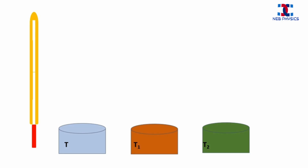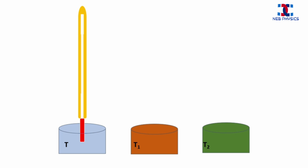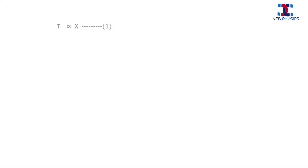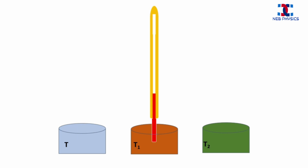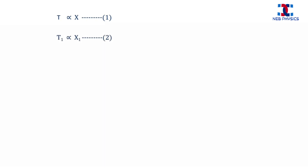Now let's see the process. First, we dip the thermometer in the first beaker and wait for the thermometric liquid to come in thermal equilibrium. Let the expansion of the thermometric liquid be x, so T is proportional to x — let this be equation 1. Now we dip the thermometer in the second beaker and wait for the thermometric liquid to expand until it comes in thermal equilibrium. Let the total expansion be x1, so T1 is proportional to x1 — let this be equation 2.